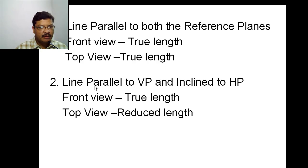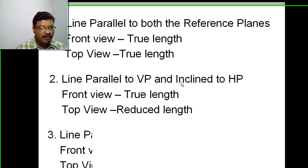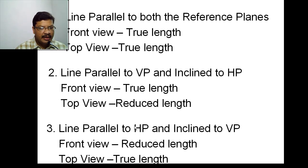The second case is when the line is parallel to VP and inclined to HP. When a line is inclined to HP, we will automatically get reduced length in the top view and true length in the front view. The third case is when the line is parallel to HP and inclined to VP — we will get true length in the top view and reduced length in the front view.